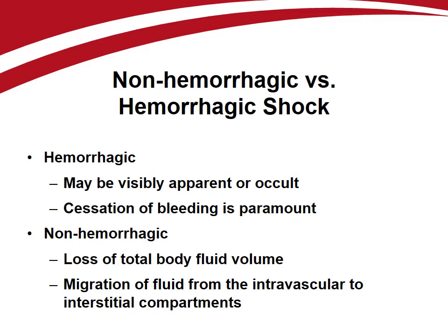Hypovolemic shock may be further subclassified as either hemorrhagic or non-hemorrhagic. Hemorrhagic shock may be visibly apparent due to external blood loss from traumatic injury, or occult, as in chronic gastrointestinal hemorrhage. Emphasis on hemorrhage control rather than simply volume replacement is an essential difference in the management of hemorrhagic shock.